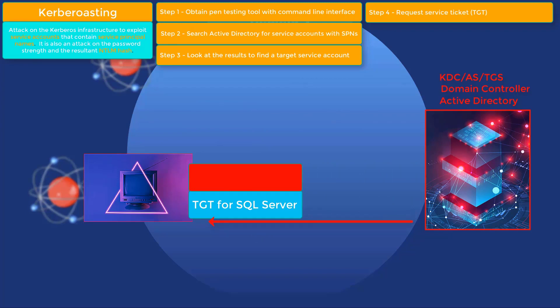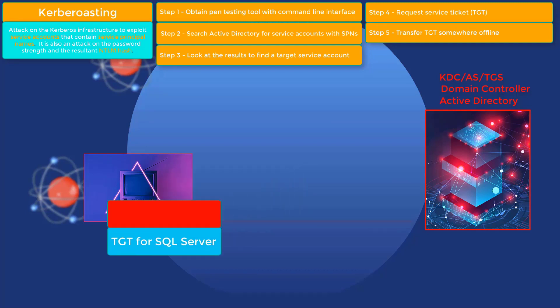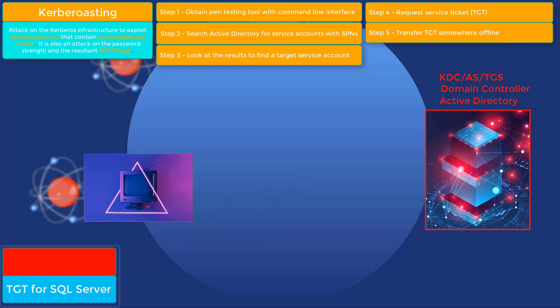In step five, after we have been given the TGT, we will use another pen testing tool to offload that ticket from memory to somewhere offline on our system to brute force — like an external drive, or even just a local folder or file.